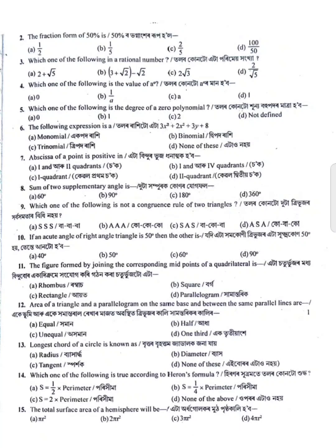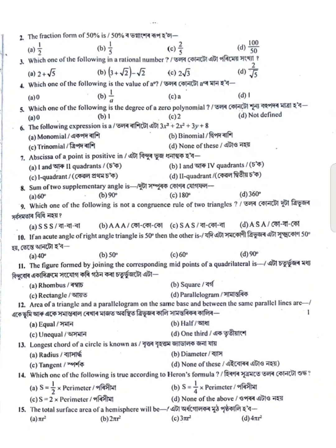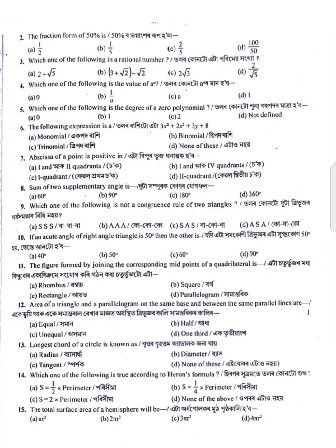The degree of the zero polynomial is zero. Then number six: the following expression is 3x squared plus 2x squared plus 2x plus 8. The next question: the sum of two supplementary angles is 180 degrees. Then the following is the congruence rule of two triangles.